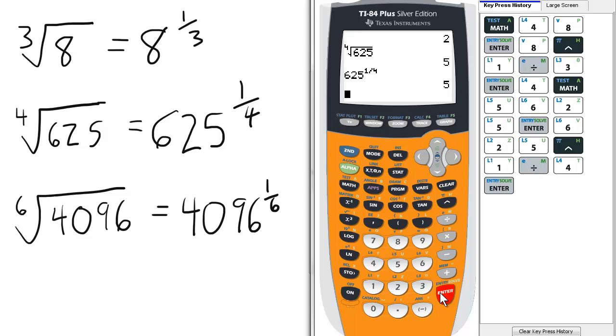And then we can repeat the process, entering 6 as the index of the radicand for the 6th root of 4096. So now we press 6 and then math, from the math menu select the fifth option, and then enter 4096 under the radical.